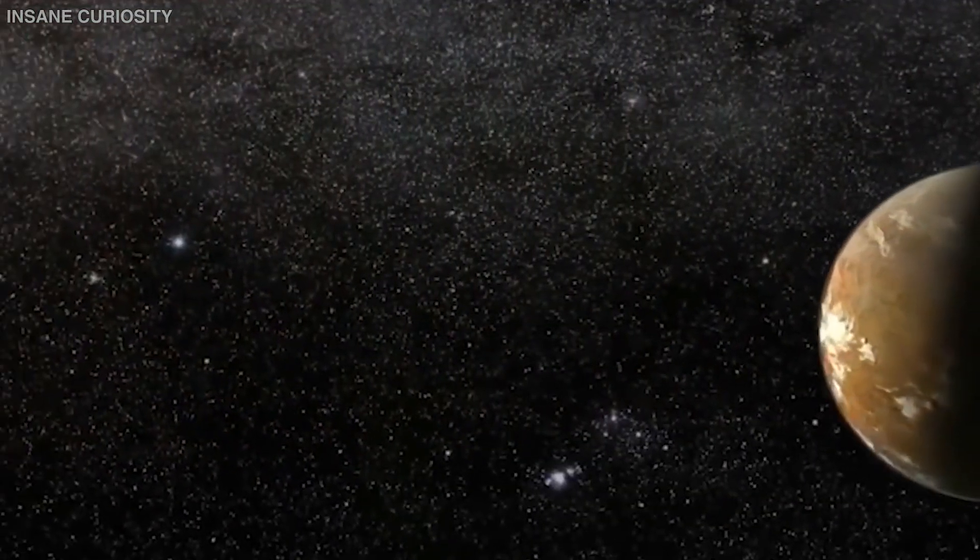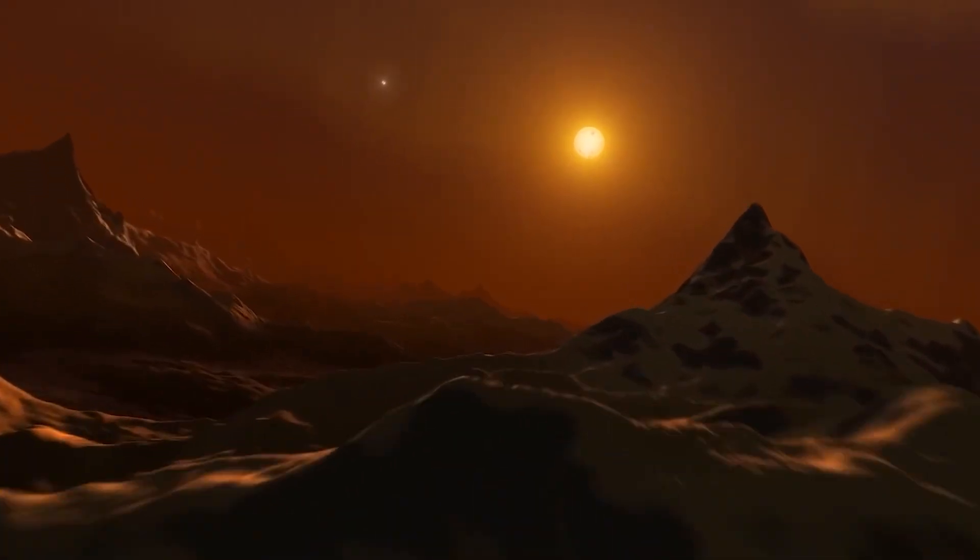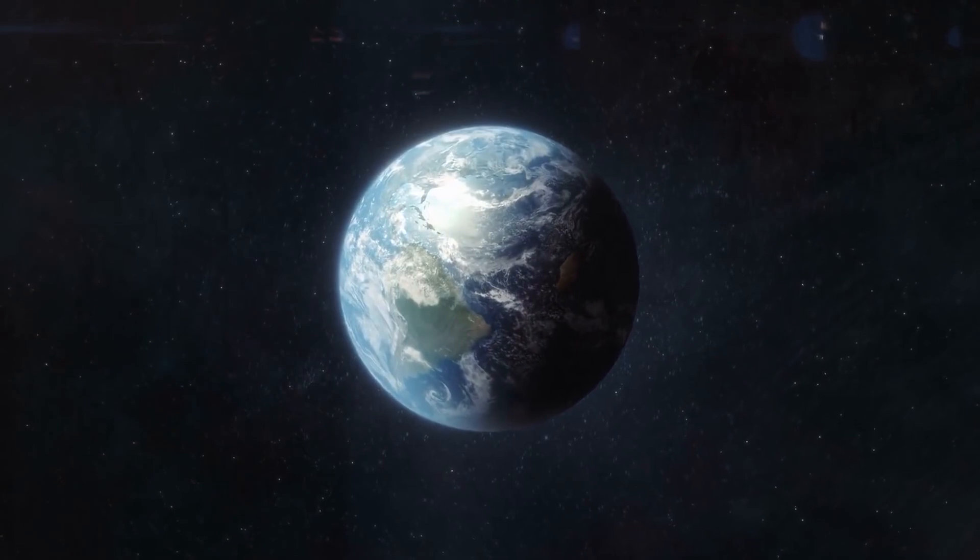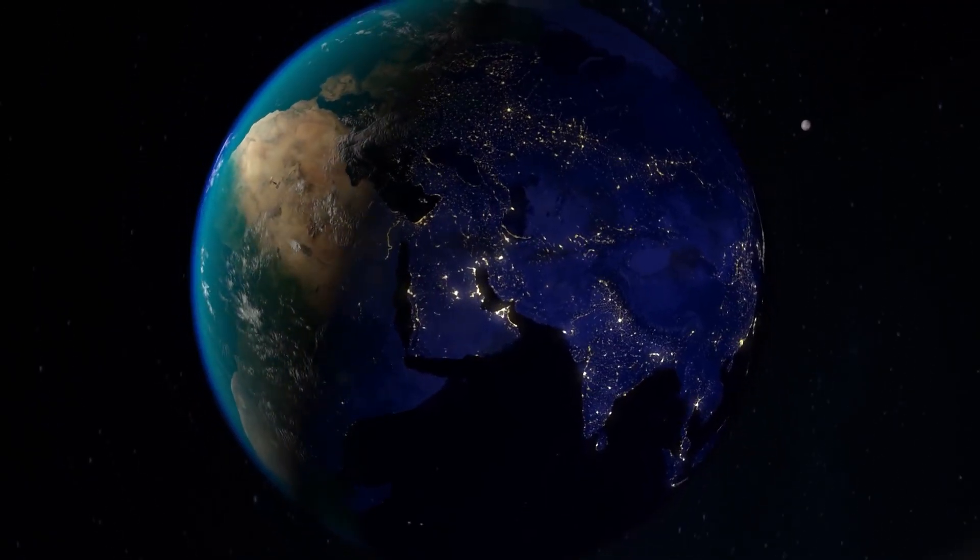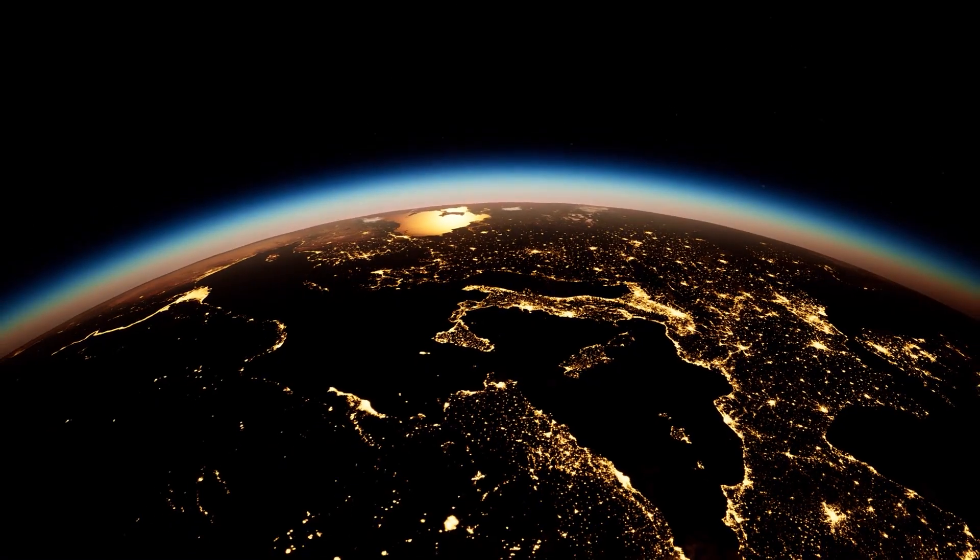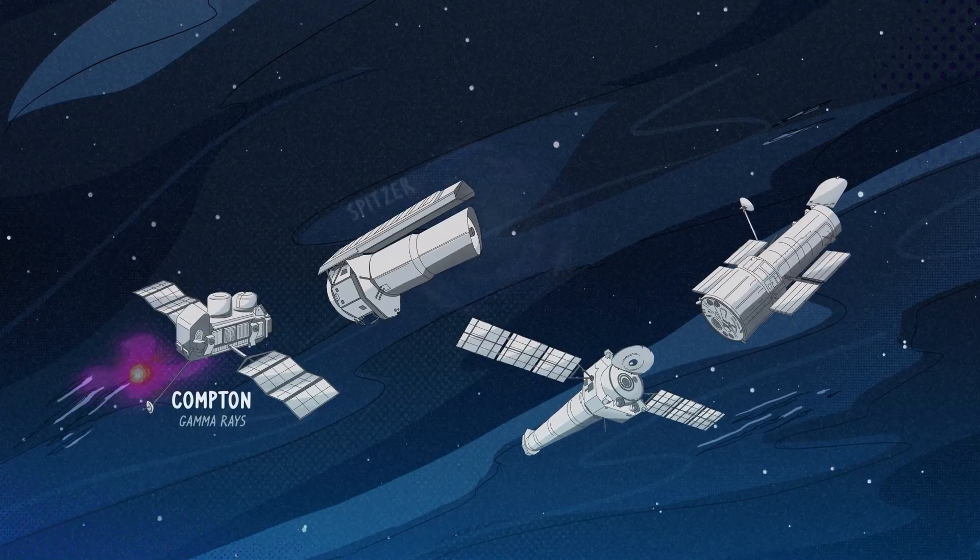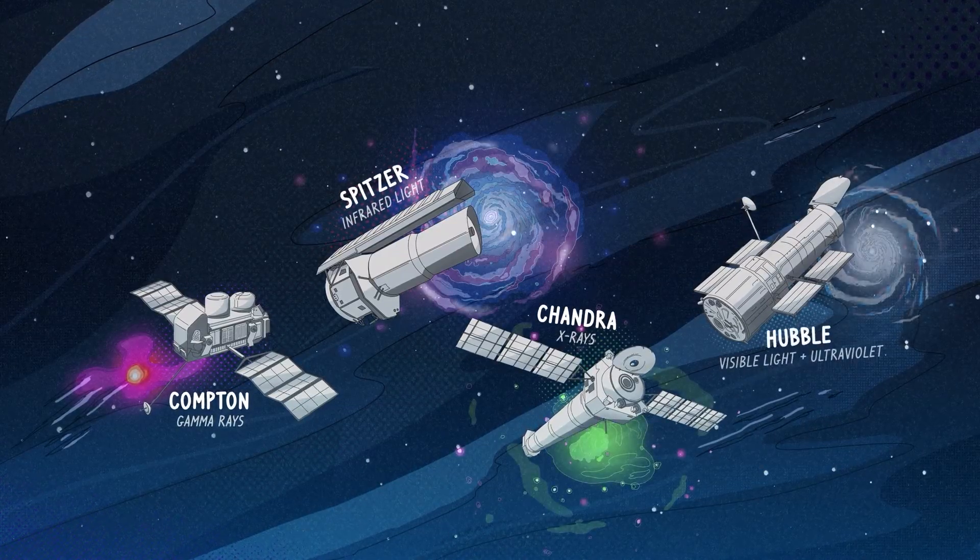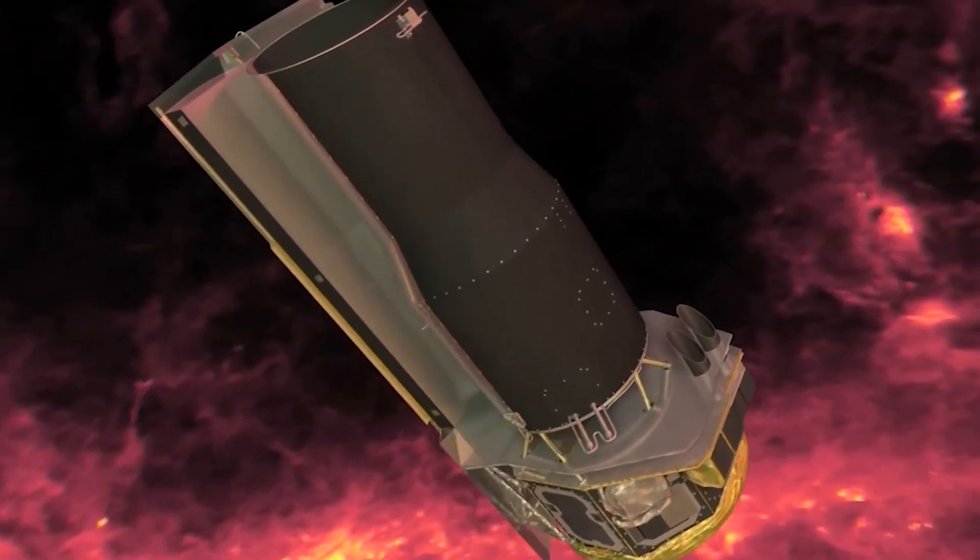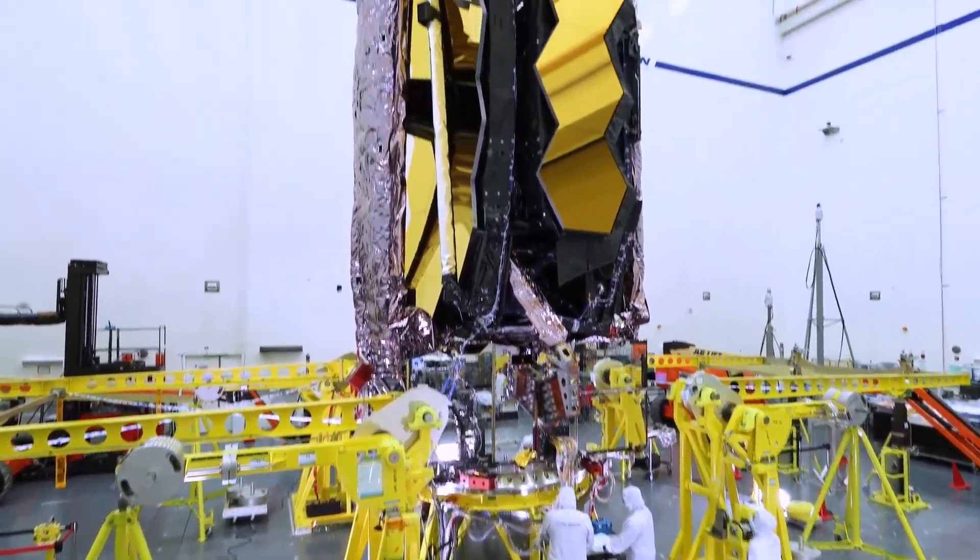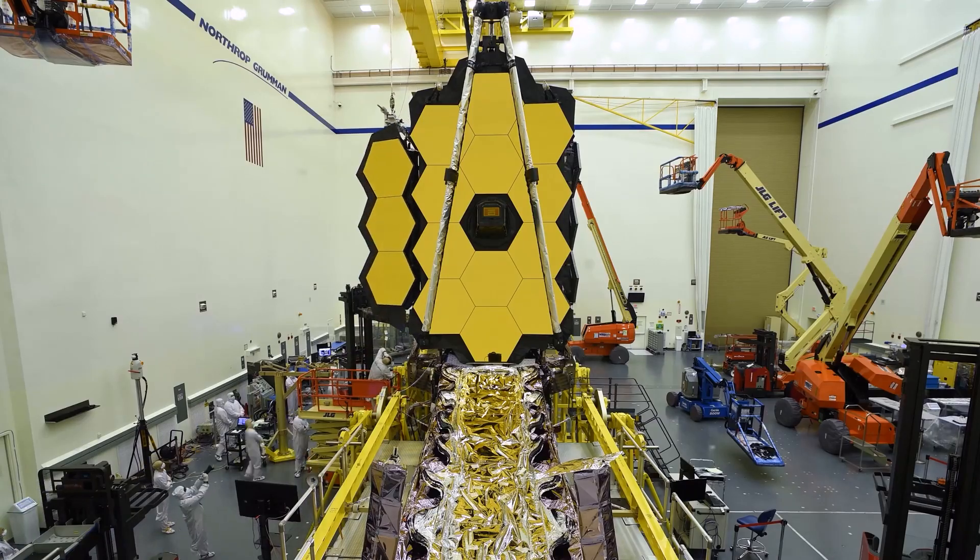So why don't we just directly look at planets in Proxima Centauri and see if civilization is there? Well, from space, the most obvious sign somebody lives on Earth is the glow from the night side of our planet. Our cities emit light that escapes into the cosmos. The problem is that our current generation of telescopes is not powerful enough to see lights on distant worlds.